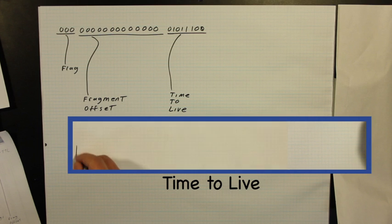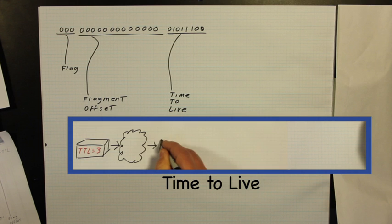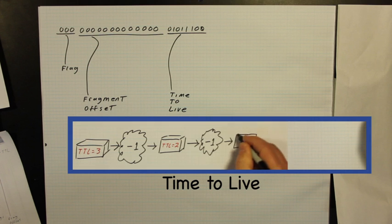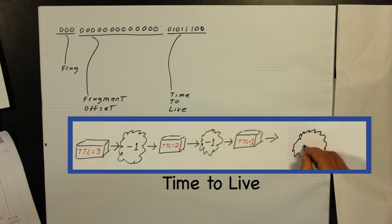In order to prevent packets from cycling around a network without ever arriving at their destination, each packet is given an amount of time to live. It's really a countdown as devices the packet passes through subtract from the initial value. When 0 is reached, if it hasn't gotten to its destination, it's eliminated.